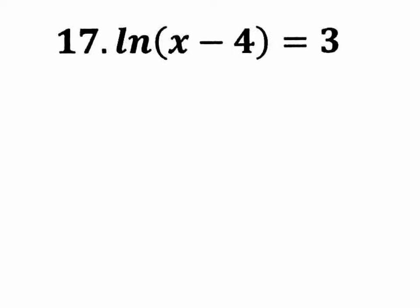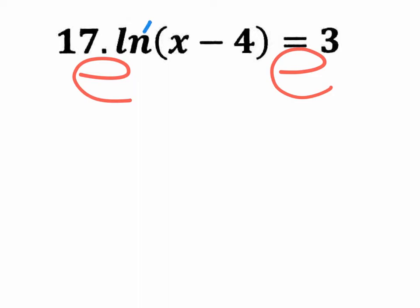This is video number four, jumping to problem number 17. How do we get rid of ln? By raising it to the power of base e. After all, ln is really log base e, so to get rid of a log base e you raise it to the power of base e — put a big giant e right there. That way, e to the ln cancels out, giving a new equation: x minus four equals e to the third.